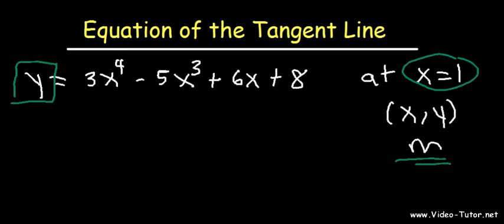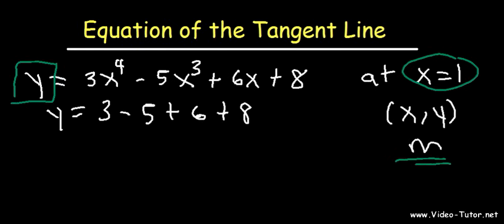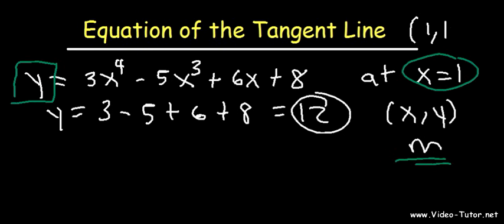So let's begin. Let's plug in 1 first. y is equal to 3 minus 5 plus 6 plus 8. 1 to the 4th is 1, 1 to the 3rd is 1. 3 minus 5 is negative 2. Add that to 6, that's 4. 4 plus 8 is 12. So we have the point 1 comma 12.